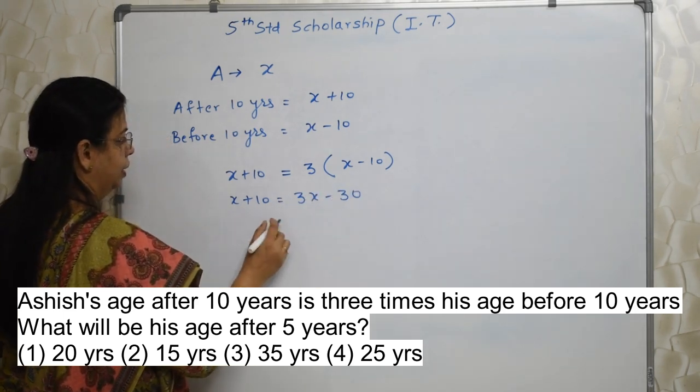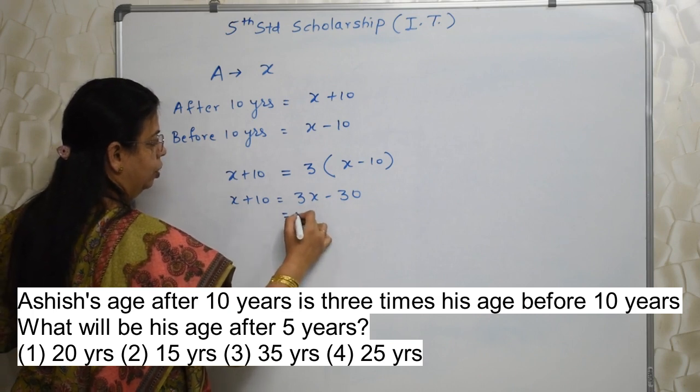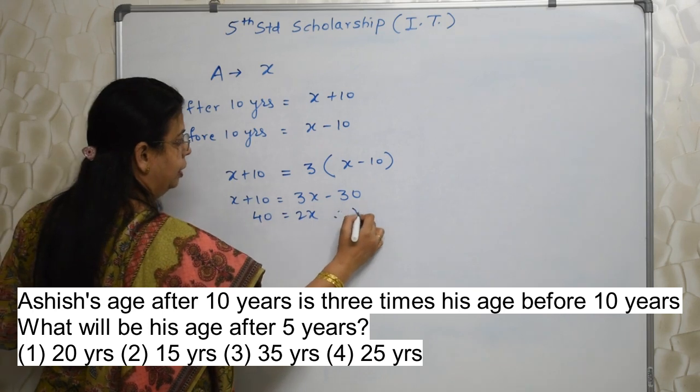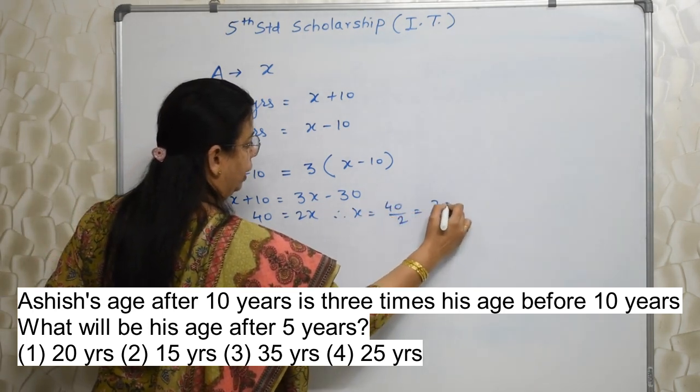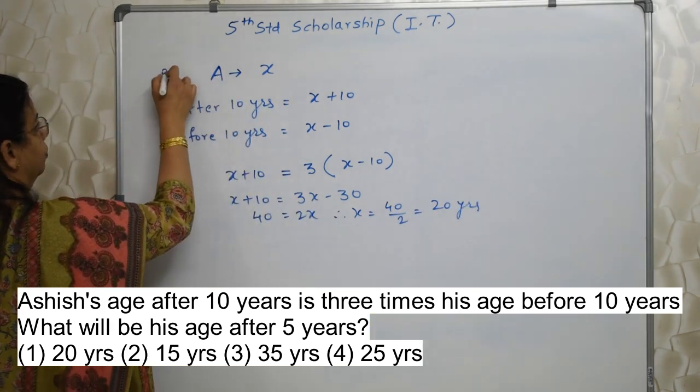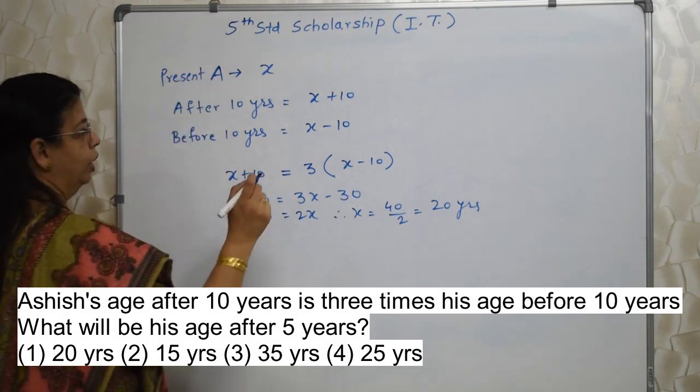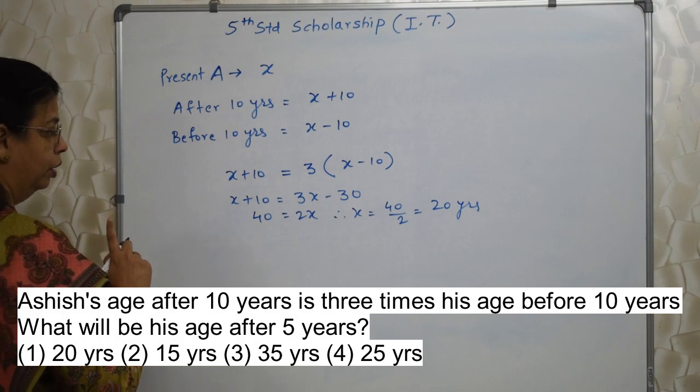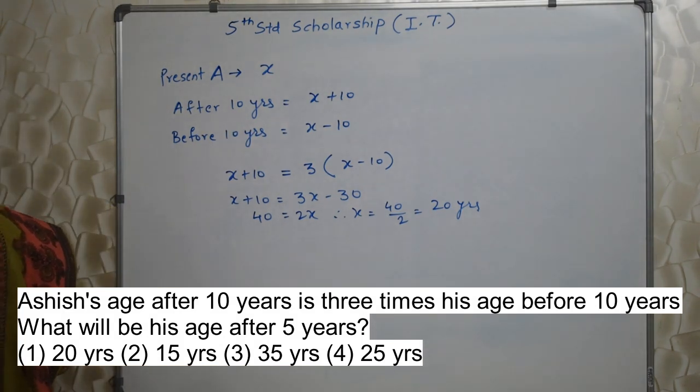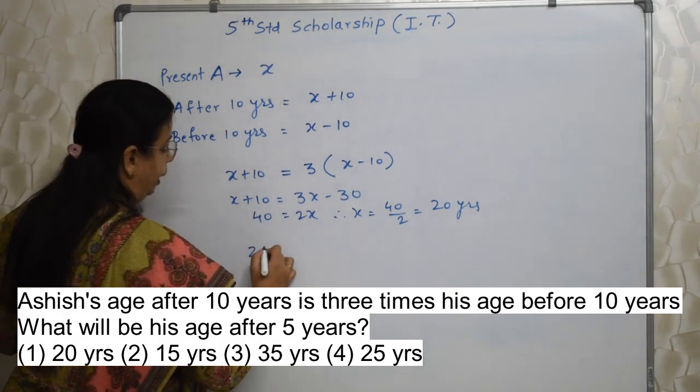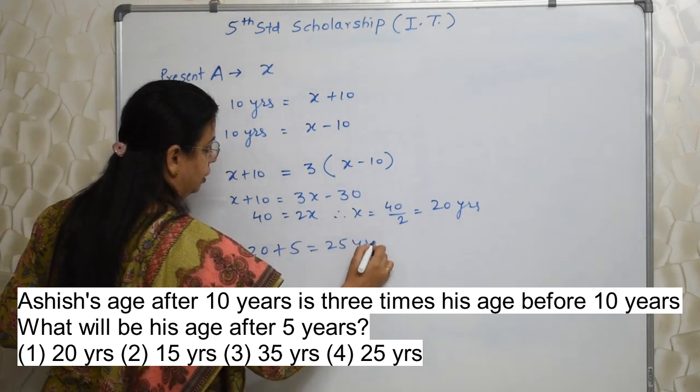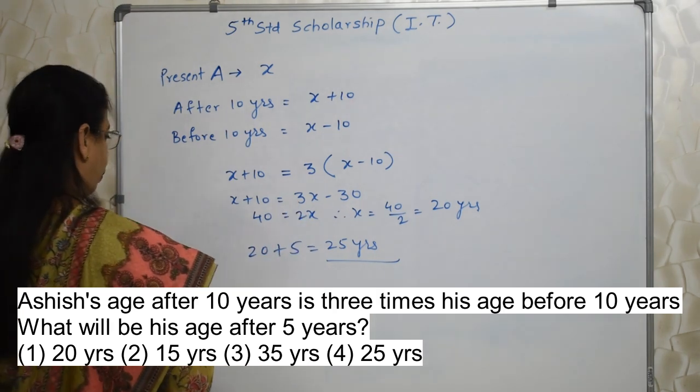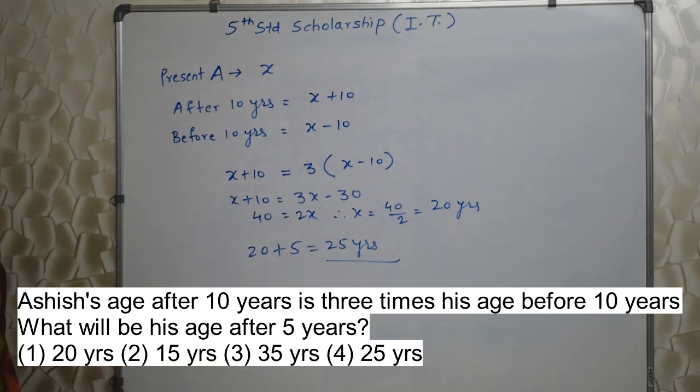So x plus 10 equals 3 times x minus 10. This is translation of English into mathematical language. Solve it: 3x minus 30 equals x plus 10. Please be careful with the signs. 3x minus x is 2x, and this 30 plus 10 is 40. Therefore x equals 40 divided by 2, that is 20 years. That is his present age. Please don't take 20 as the correct option because they are asking what is his age after 5 years. So 20 plus 5, 25 years is the answer. If you choose this even though everything is correct, you will lose 2 marks. Always keep an eye on the final question.